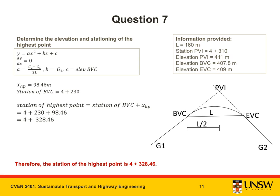Now that we have x_HP and the station of BVC, we can find the station of the highest point by adding x_HP to the station of BVC: 4+230 + 98.46 = 4+328.46. Therefore, the station of the highest point is 4+328.46.